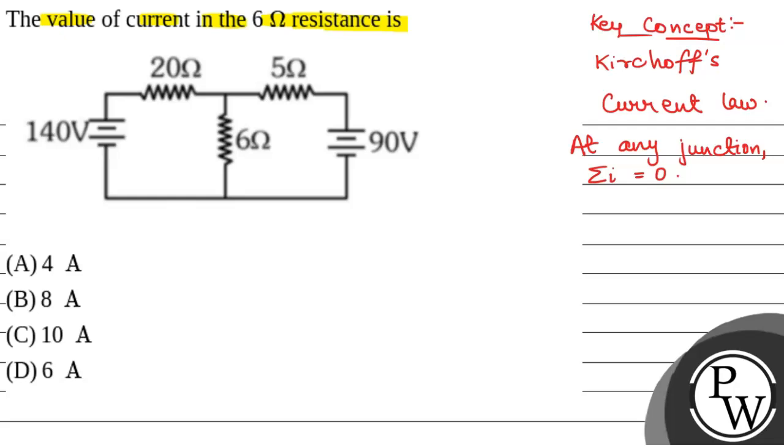Now, we will see, if we take this point at 0 potential, that is, if we ground this point, then the voltage here will be 0. Here it will also be 0, as all are connected with a wire. So, here it will also be 0.